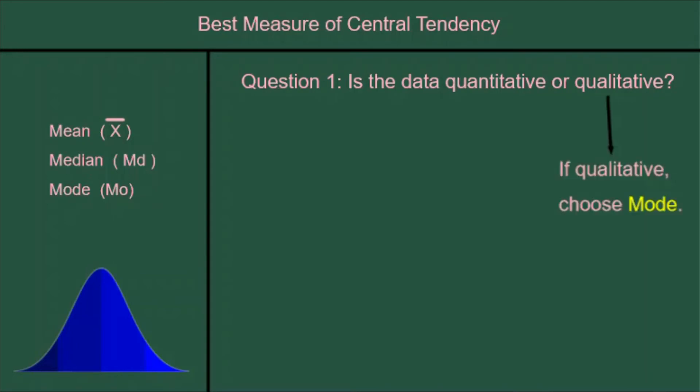If it's qualitative, you choose mode and you're finished. You don't have to answer question two. Qualitative data can't have a mean or a median because it's not made from numbers. Therefore, mode is the only choice.